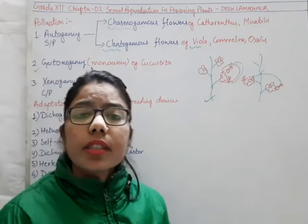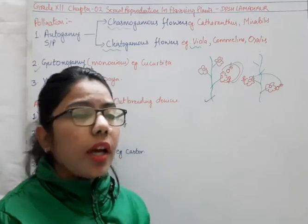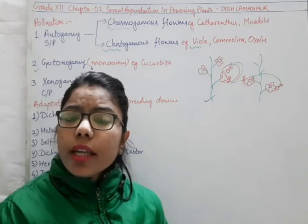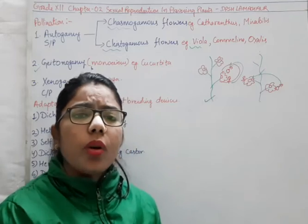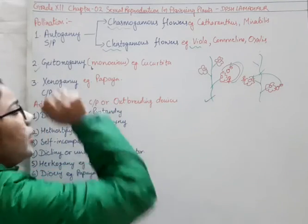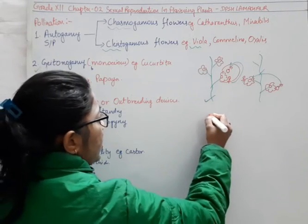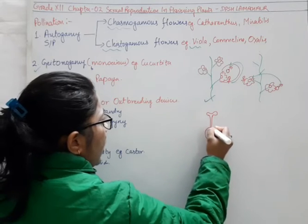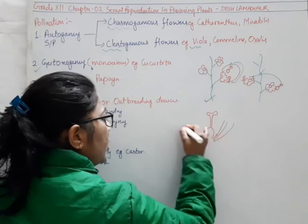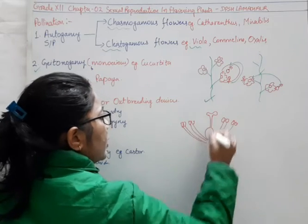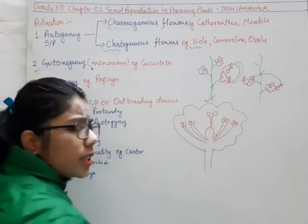In the previous lecture, I discussed the difference between monoecious and dioecious flowers. Monoecious flowers are also known as bisexual flowers because both the male as well as female reproductive units are present on the same flower. I have shown this with the help of a diagram: stigma, style, and ovary form the female part, and the male part is also present on the same flower.